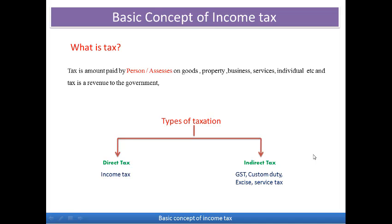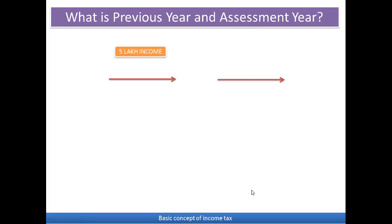The second type is indirect tax — a tax paid through another person to the government, requiring a mediator. For example, GST: when you buy goods or services, you do not pay the tax directly to the government. The mediator is the seller or vendor — you pay the tax to the seller, and through that person the tax is paid to the government. Other examples include custom duty and excise duty.